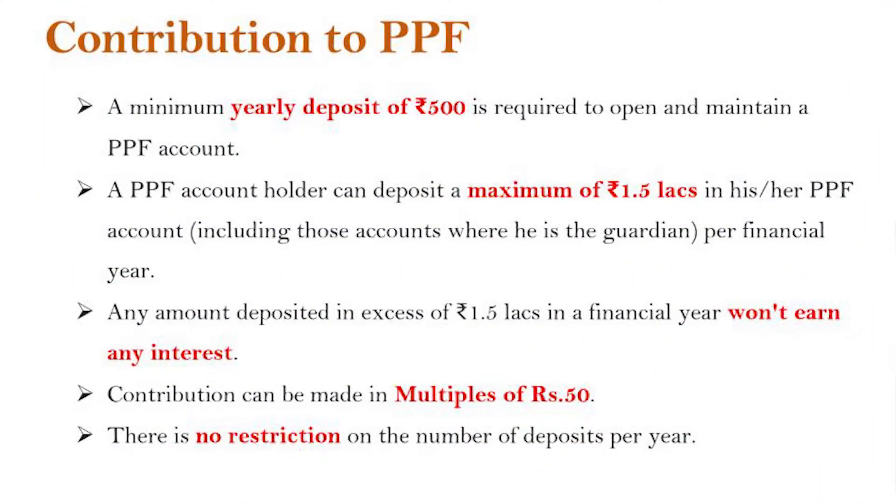The minimum contribution is 500 per year, and the maximum is 1.5 lakhs per year. The PPF contribution has this same income limit — the maximum limit is 1.5 lakhs. You can contribute in multiples of 50, so you can contribute amounts like 600, 700, or 650. You can deposit any number of times during the year. There is no restriction on the number of deposits.